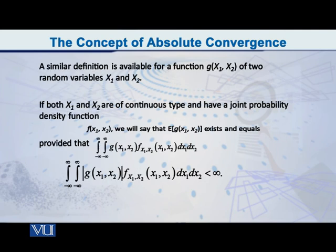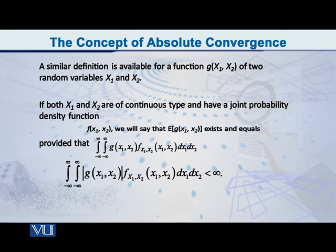If both x1 and x2 are continuous random variables and they have a joint PDF f of x1, x2, then we say that the expected value of g of x1, x2 — a function of x1 and x2 — exists and it is equal to the double integral of g of x1, x2 multiplied by the joint PDF f of x1, x2, provided that the double integral of the absolute value of g of x1, x2 multiplied by f of x1, x2 is less than infinity. This is a further extension of what was said before.